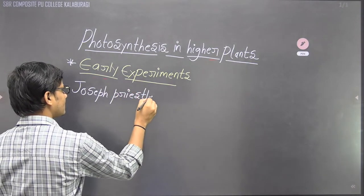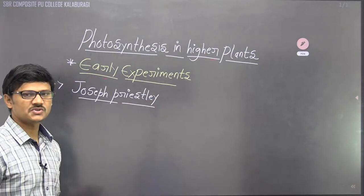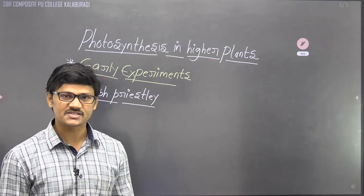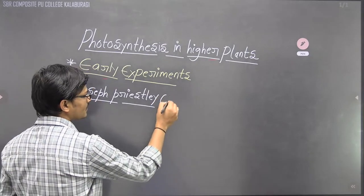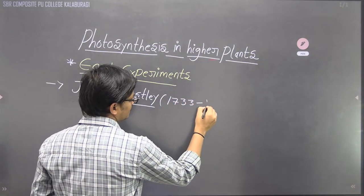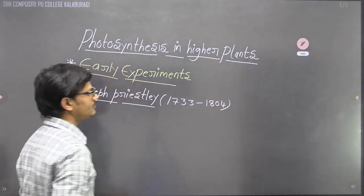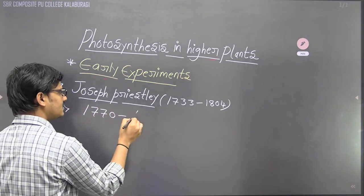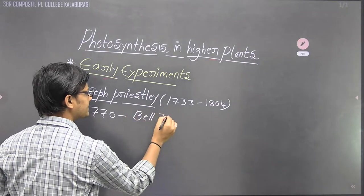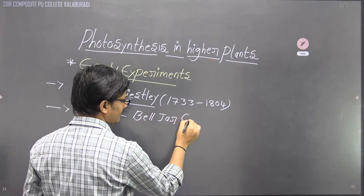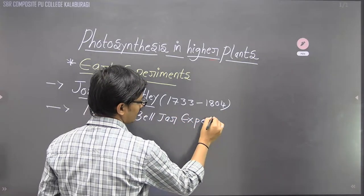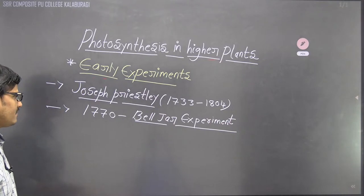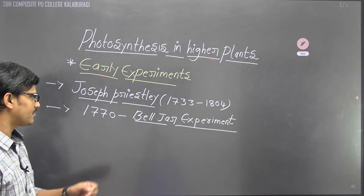Joseph Priestley was a British scientist who conducted experiments on the photosynthesis mechanism in the earliest possible years. His lifespan was 1733 to 1804, and he conducted his experiment in the year 1770. This experiment is popularly called the Bell Jar experiment.